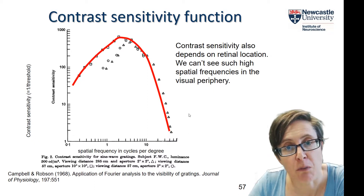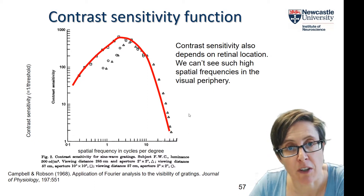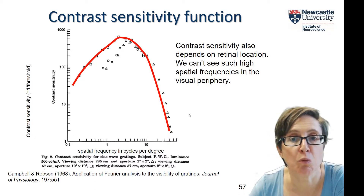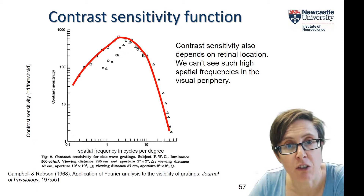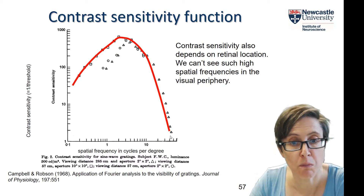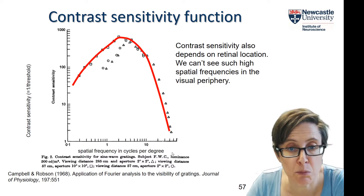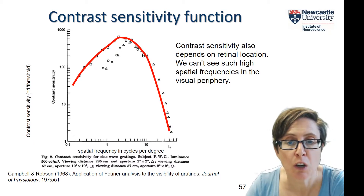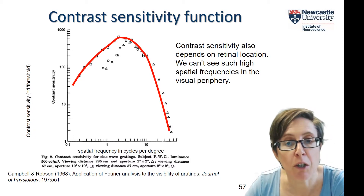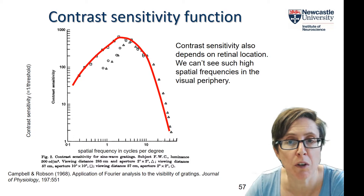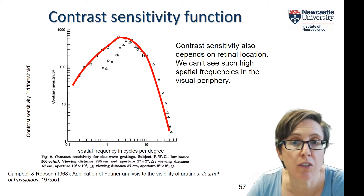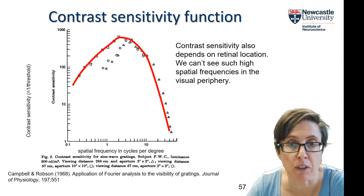One factor that affects contrast sensitivity is where in the retina you're measuring it. This particular contrast sensitivity function was measured at Campbell's fovea, where he has the highest acuity. If you measure it in the visual periphery, where we have many fewer cone photoreceptors, you can't see such high spatial frequencies.